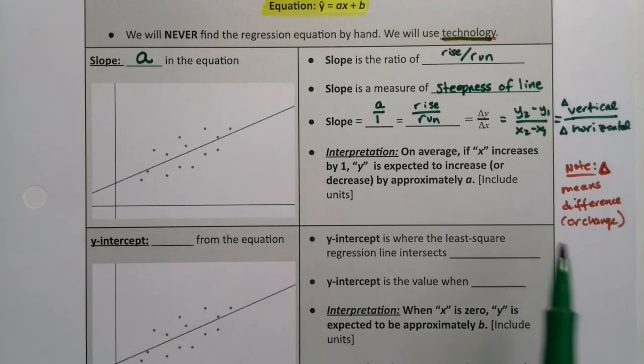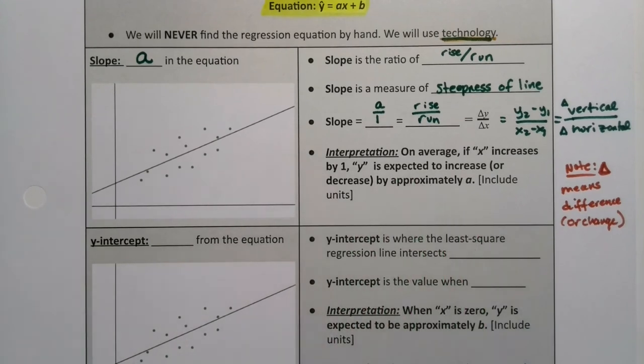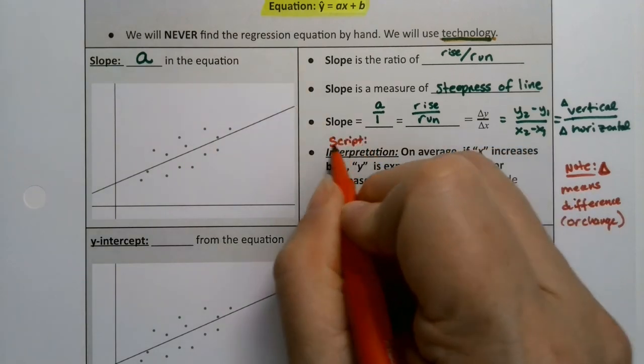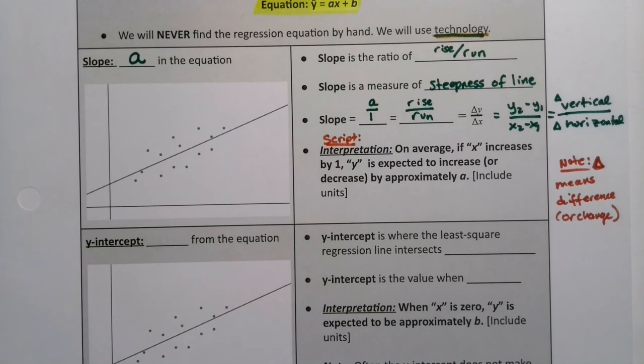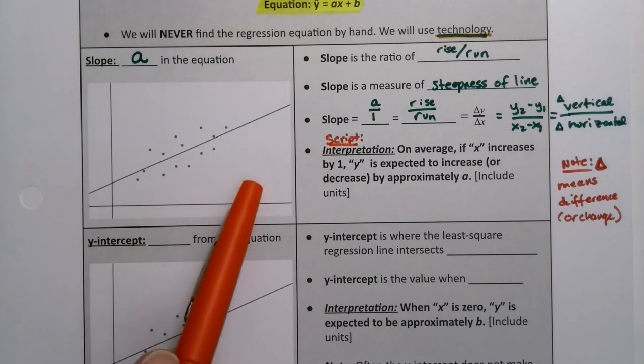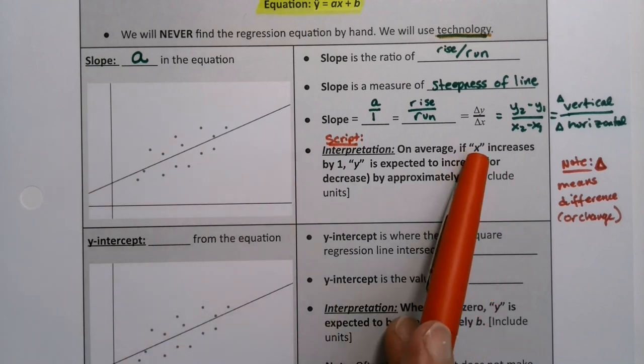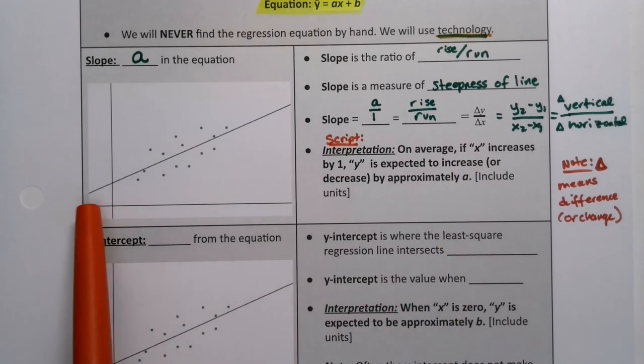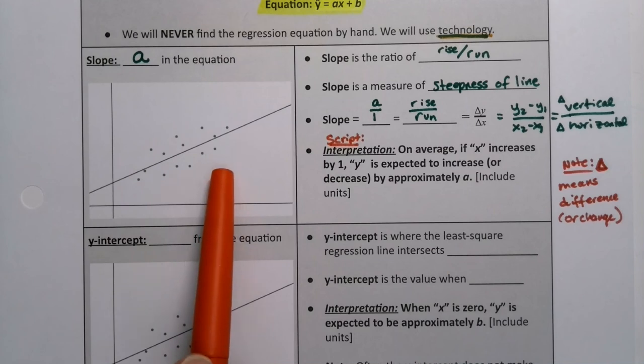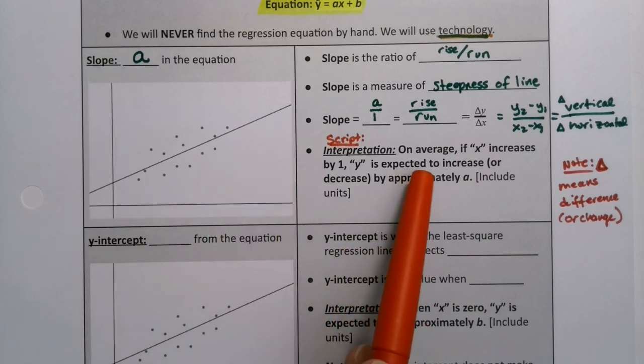Well, this is a little script you can follow. You say, on average, if x increases by 1 - and you can include units there, so if x increases by $1 or by 1 inch - and x, you're going to put in what context it is. So you'll say what it actually was in the problem. If my fertility rate increases by 1 or if my GDP increases by 1.